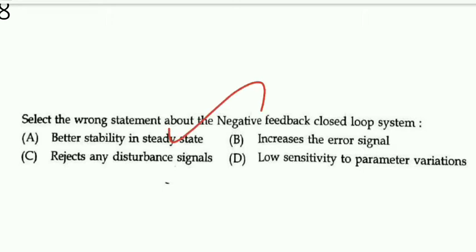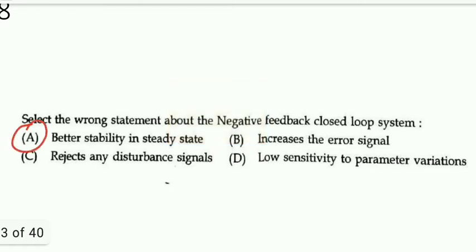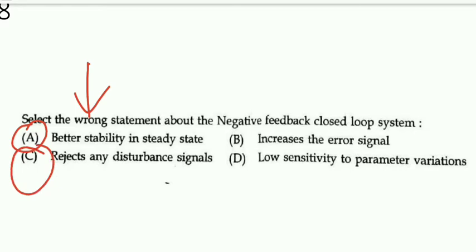Next question: select the wrong statement about the negative feedback closed-loop system. 'It increases stability in steady state' — that is a right statement. 'It rejects any disturbance signal' — also right. 'Low sensitivity to parameter variation' — also right. 'It increases the error signal' — NO, negative feedback decreases the error signal. So that is the wrong statement and the correct option.